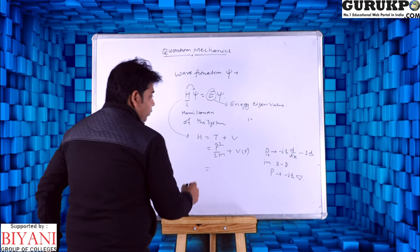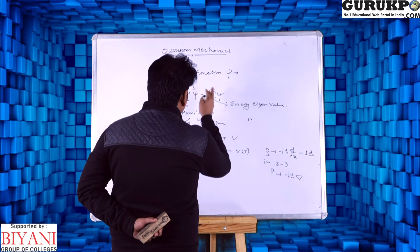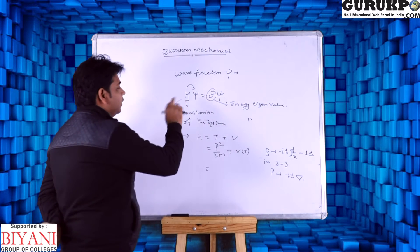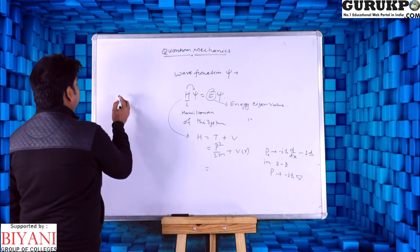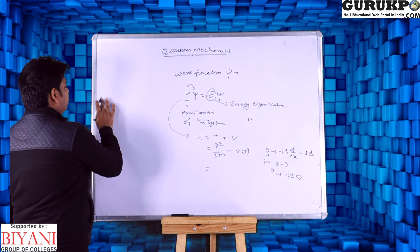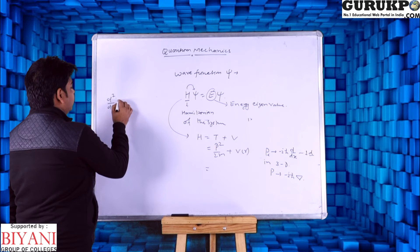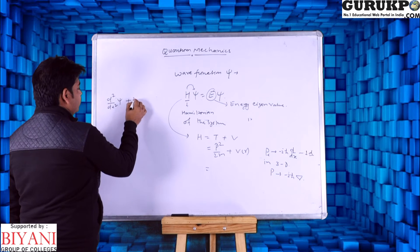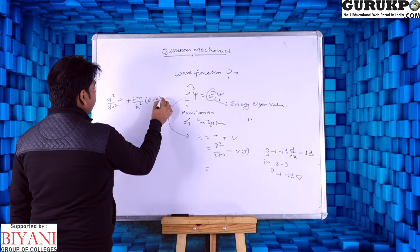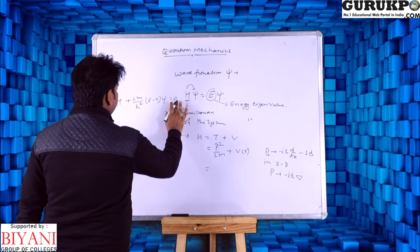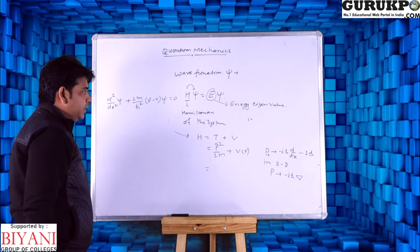We substitute these quantities into the Hamiltonian and obtain the Schrödinger equation, which is: d squared psi by dx squared plus 2m by H-bar squared times (E minus V) psi equals 0. This is the Schrödinger equation in the one-dimensional system.